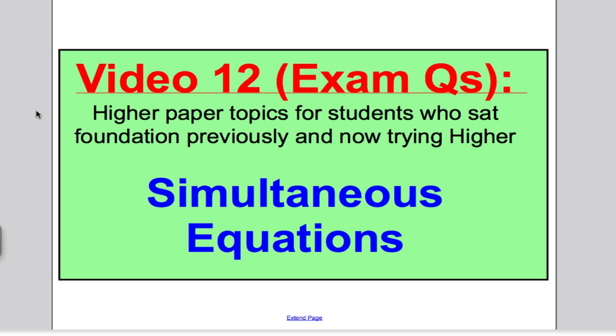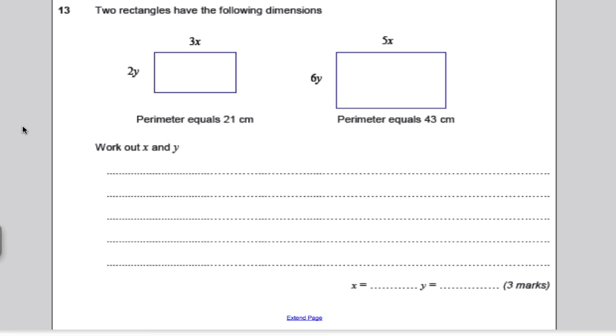As always, pause the video now, have a go, see if you can do it based on the fact that you've watched video 11, and then in 10 seconds I'll go through the actual solution. This question tells us that two rectangles have the following dimensions. So they tell us this side is 2Y, so obviously that side is 2Y, that side is 3X, so that must be, and the perimeter adds up to 21. And this perimeter is 43, and that must be 6Y, and that must be 5X. It tells us to work out X and Y.